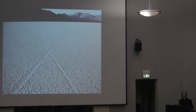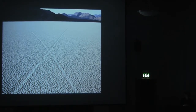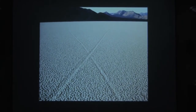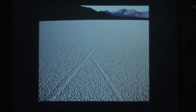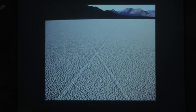All right, glad to be here. Thank you, Gail, for that great introduction. We'll start with an image from the California landscape. I'll use this to talk about what I'll be discussing this evening. This is a very unique landscape in Death Valley called the Racetrack.